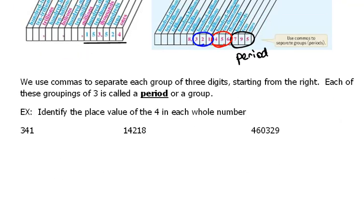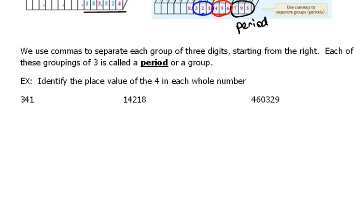Alright, now let's see what they're going to have us do here. First of all, it's just going to be naming the place value. So they want us to identify the place value of the four in each number. So here we have 341. The four is actually in the tens spot.